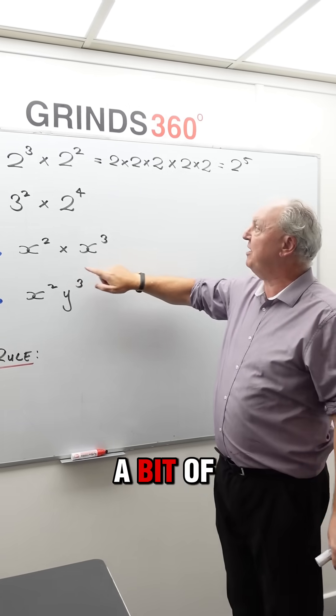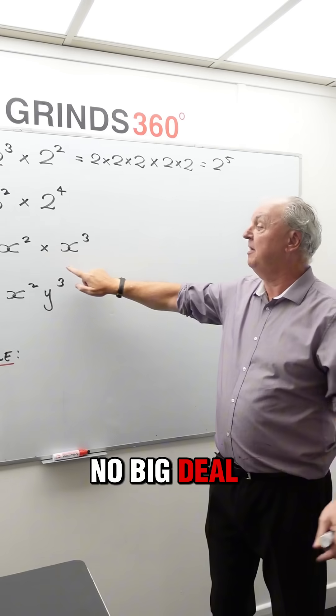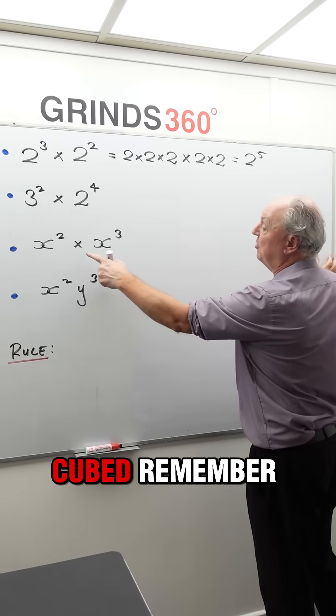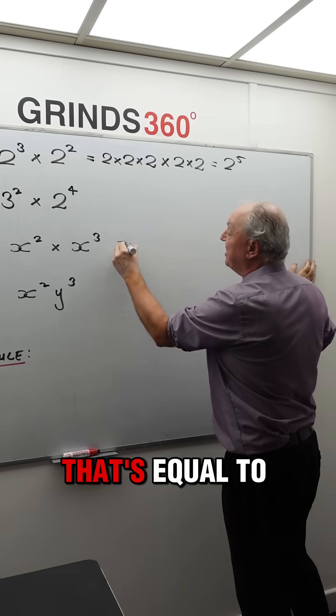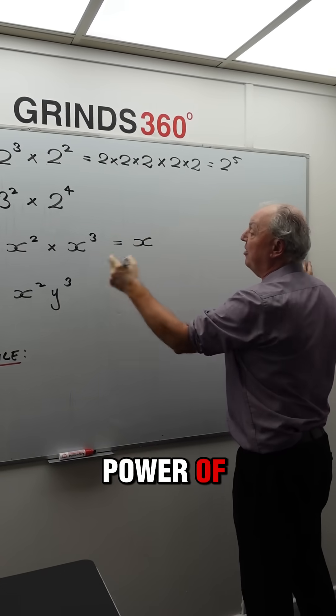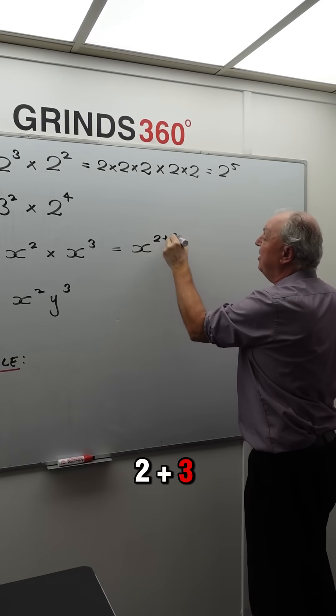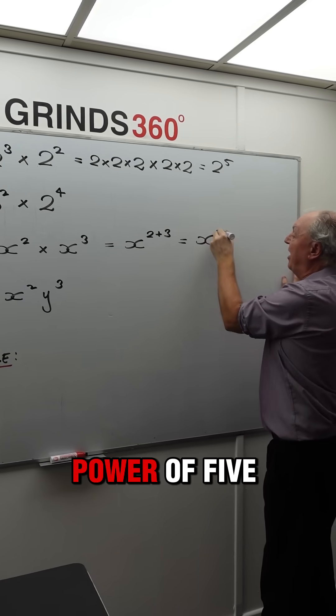What happens if we go to a bit of algebra? No big deal. You've got x squared by x cubed. Remember, don't mix up the multiplication sign with the x. That's equal to x to the power of—add the powers—2 plus 3, so you get x to the power of 5.